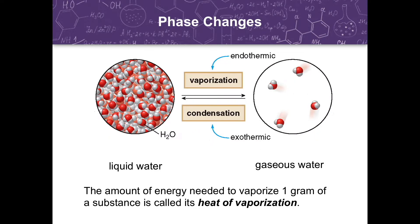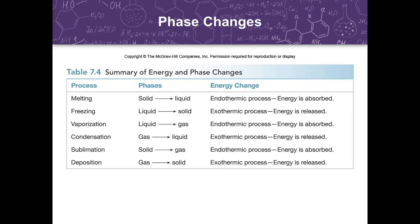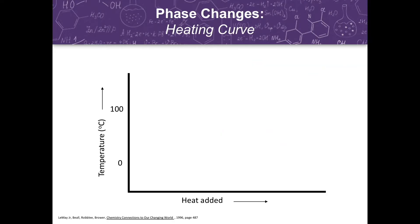We also have heat of vaporization, which is the amount of energy needed to vaporize one gram of a substance. Here is a summary of the energy and phase changes that matter undergoes. Hopefully, you are still aware of the endothermic and exothermic process, as well as the phase changes.